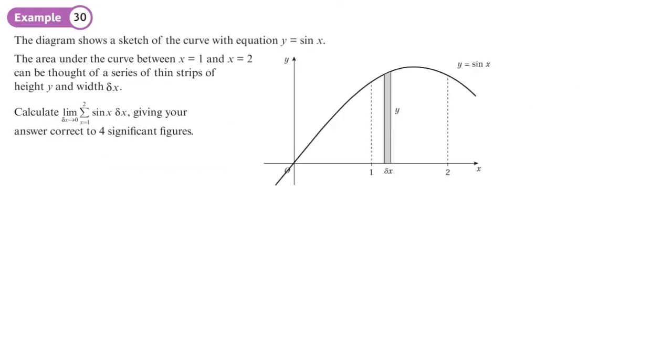So here's an example. This is a sketch of a curve, and the equation of that curve is Y equals sine X. The area under the curve between one and two can be thought of as a series of thin strips of height Y or F of X and width delta X.